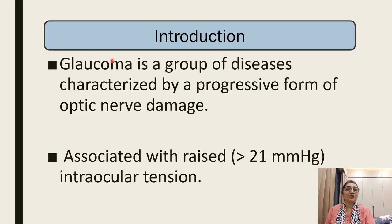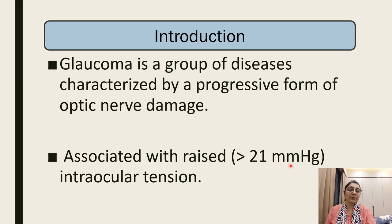What is Glaucoma? Glaucoma is a group of diseases characterized by progressive optic nerve damage. The normal range of intraocular tension is 10 to 20 mmHg. If it rises above 21 mmHg, glaucoma can precipitate and it causes optic nerve damage.